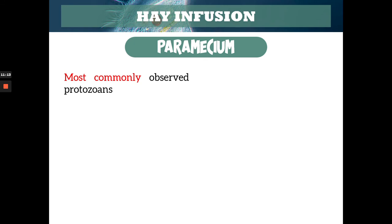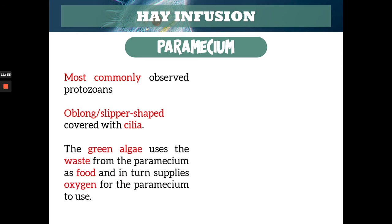Paramecium is really popular — I remember it being introduced during high school. It's the most commonly observed protozoan. It's oblong or slipper-shaped and is covered with cilia, so therefore it's a type of ciliate. And the green algae in the environment use the waste from paramecium as food, and in turn supply oxygen for the paramecium to use. Both of them are benefiting from one another and no one is harming the other — so they are in a mutualistic relationship.